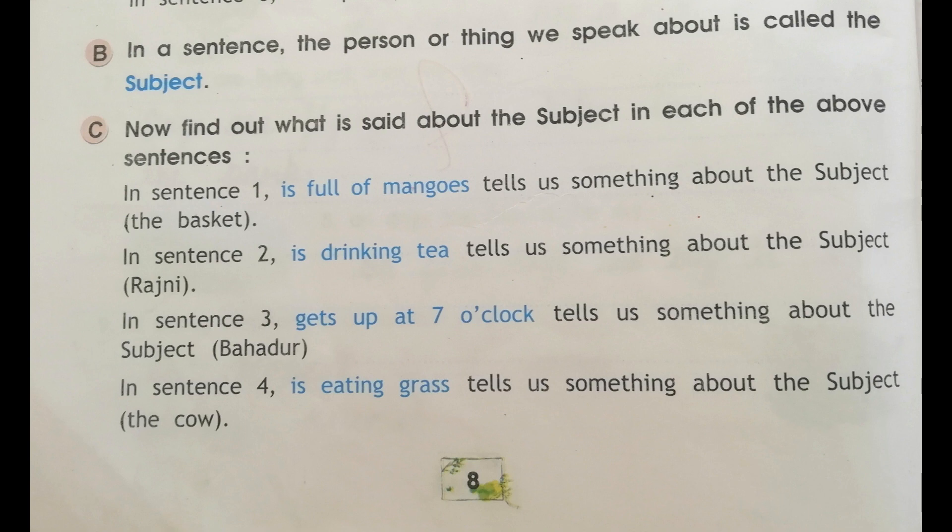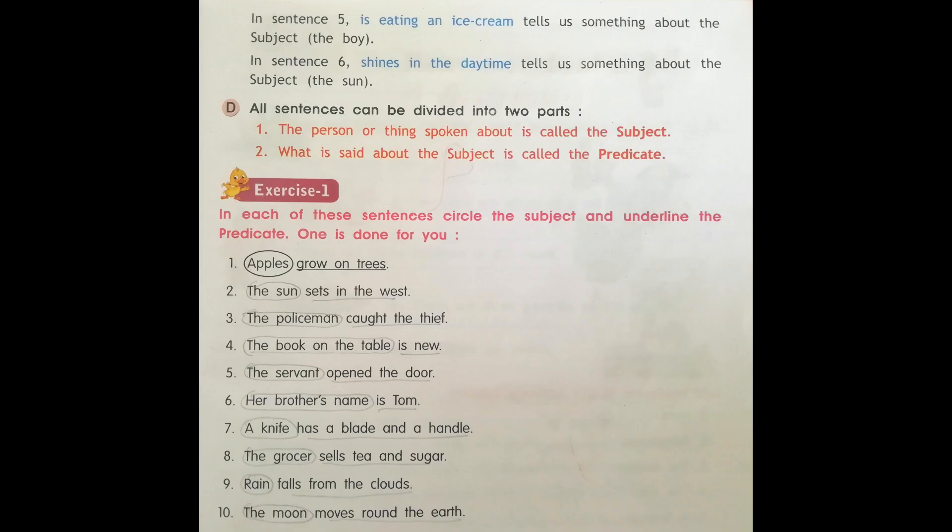In sentence 4, 'is eating grass' tells us something about the subject, the cow. In sentence 5, 'is eating an ice cream' tells us something about the subject, the boy. In sentence 6, 'shines in the daytime' tells us something about the subject, the sun.